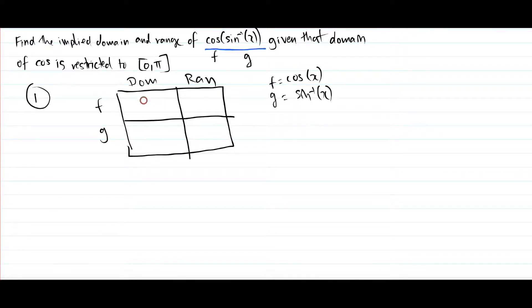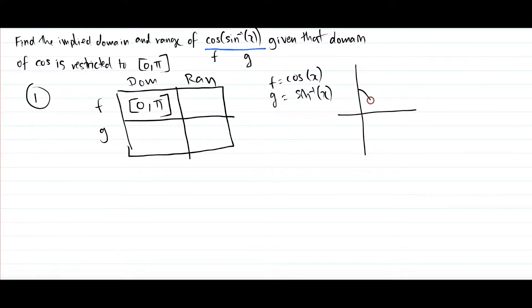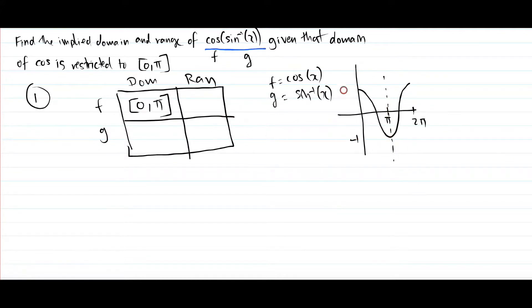So what is the domain of f? The domain of the cos graph — well, we've already been told that the domain is 0 to π. But what about the range of our cos graph? You just draw your cos graph — it looks like this — and the graph ends at 2π. If the domain is from 0 to π, π is halfway, so our range would be from negative 1 to 1.